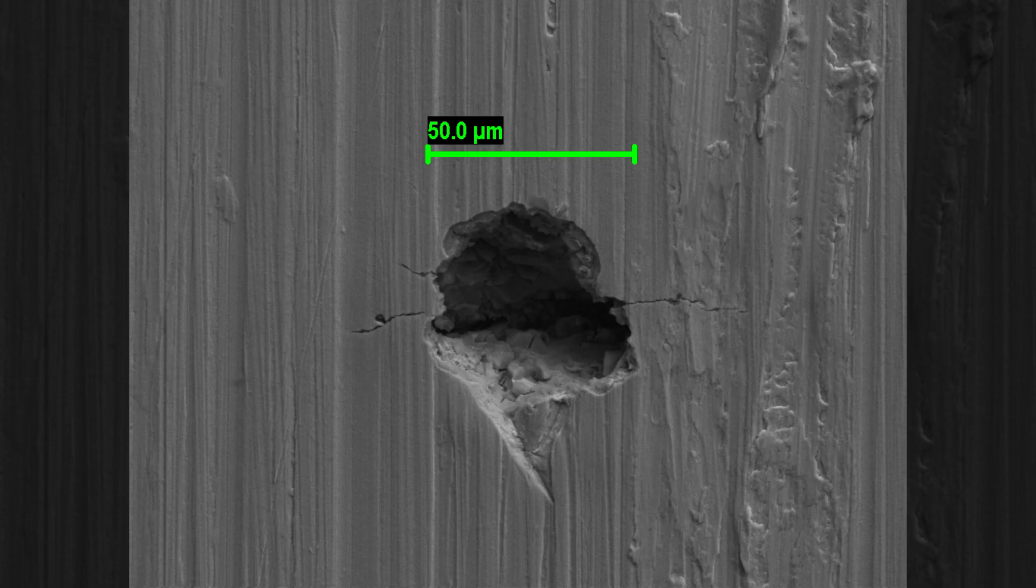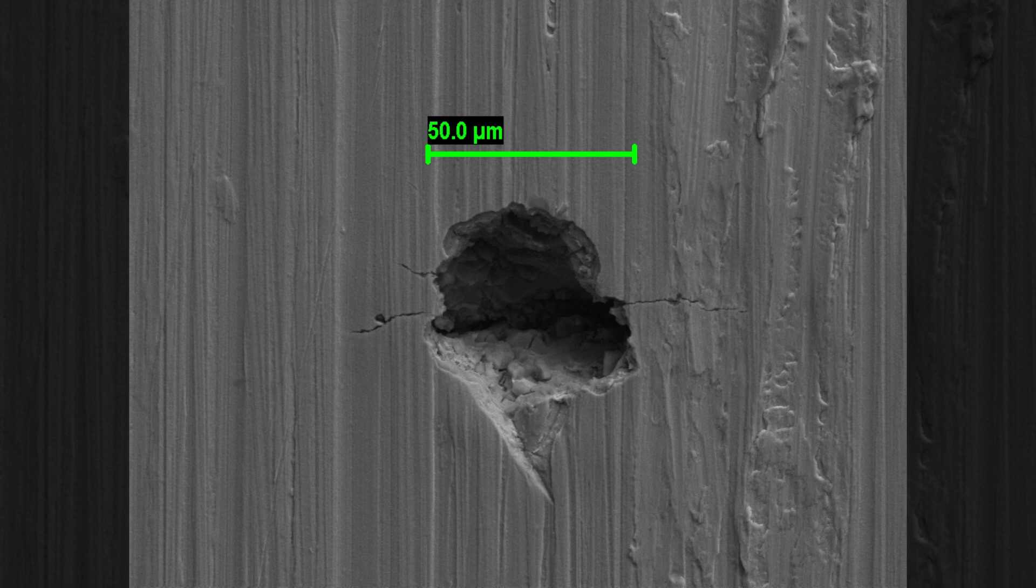Here we see an image of a typical corrosion pit in stainless steel that developed during exposure to a sour environment at high temperature. Surface cracks can be seen emanating from each side of the pit.